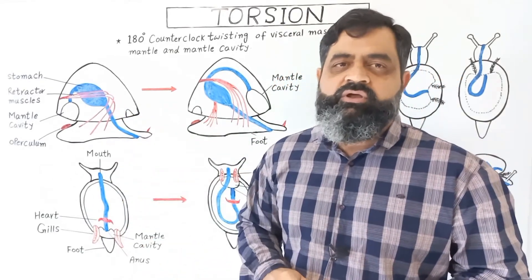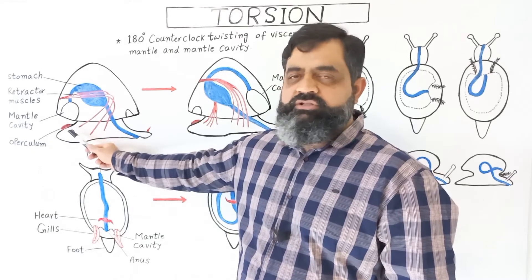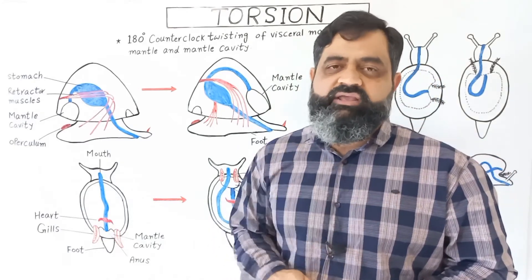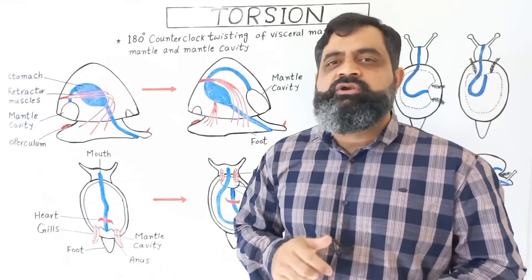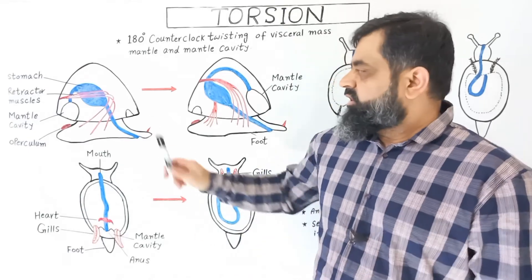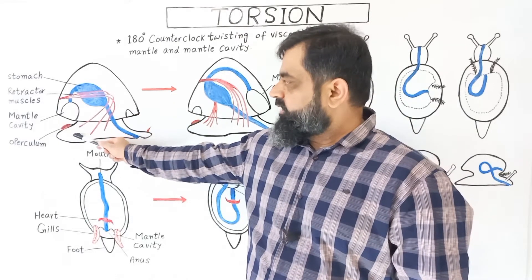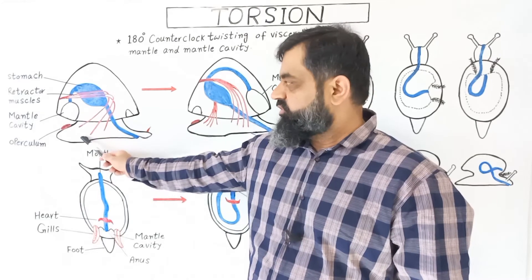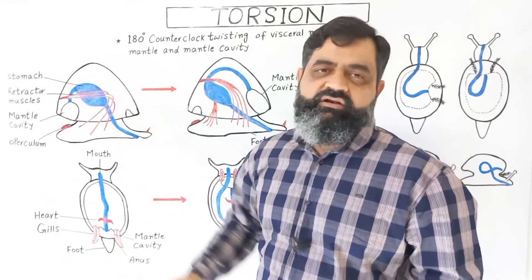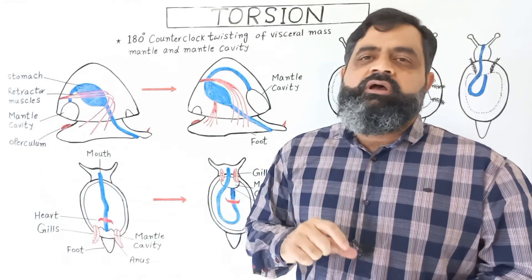The retractor muscles are responsible for the process of torsion. On the posterior surface and on the dorsal side of the foot there is a structure known as the operculum, which helps to seal the mantle cavity as the animal retreats inside the shell due to desiccation or predation. In the larval stage, when the animal retreats inside the shell, because the mantle cavity is on the posterior side, the posterior side of the body enters the shell first and then the head enters later. As you know, the head is very important and it should be protected first.